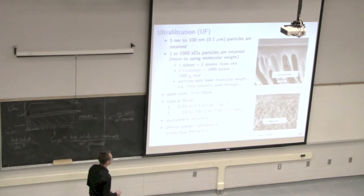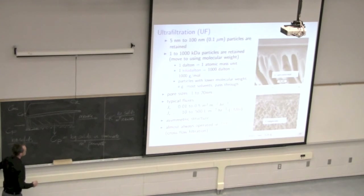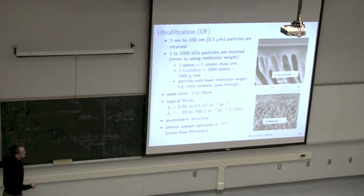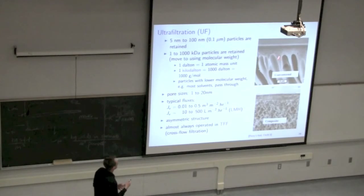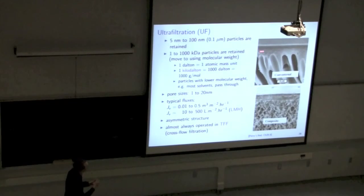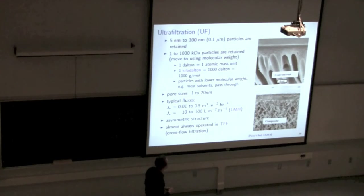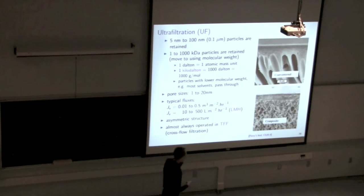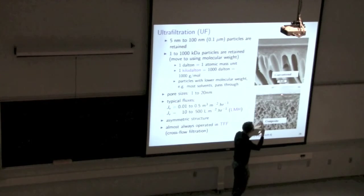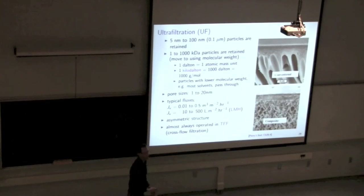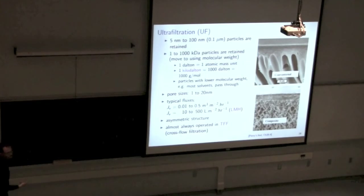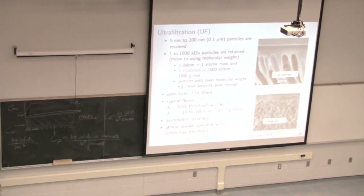These units are almost always operated in TFF (tangential flow filtration). The structure of these membranes is interesting — here's a membrane cast in one go, creating both the membrane surface at the top and the finger-like support structure beneath it that handles the pressure differences. We can also create a composite membrane by fusing two layers: a thin selective layer fused onto a more sponge-like second layer for structural support. Our focus is on working with a given membrane rather than on how they're made, though companies like GE spend a lot of engineering effort developing various membranes.